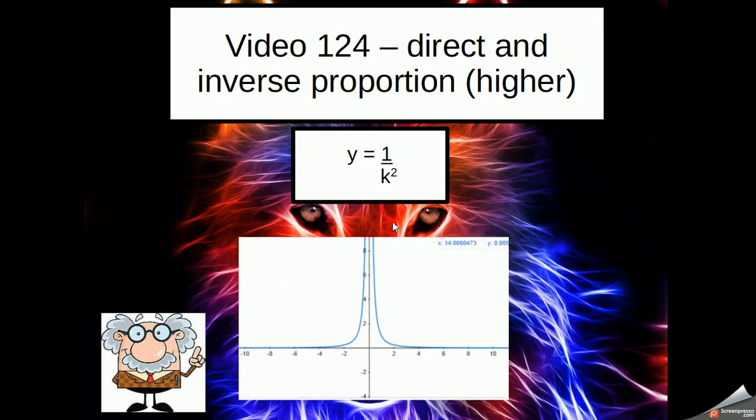Now, if we have y equals 1 over k squared, so when we've got that k squared or that x squared and it's inversely proportional, it gives us this shape instead. Starting very near the x-axis...